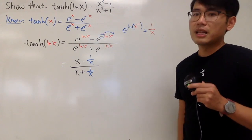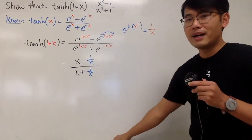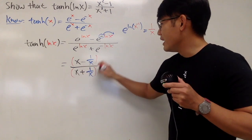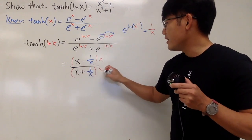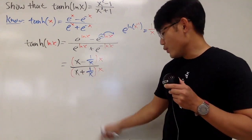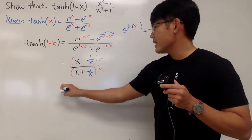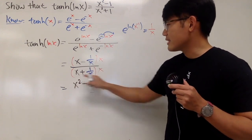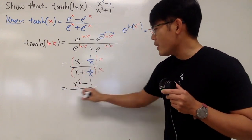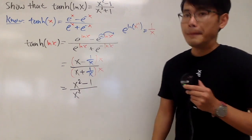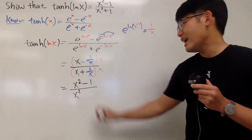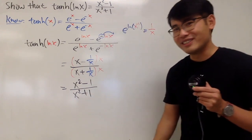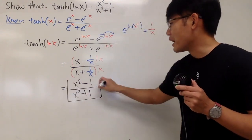We end up with a complex fraction, but we can multiply the top and bottom by x. This gives x squared minus 1 on top and x squared plus 1 on bottom. That's exactly what we have on the right-hand side. We are done.